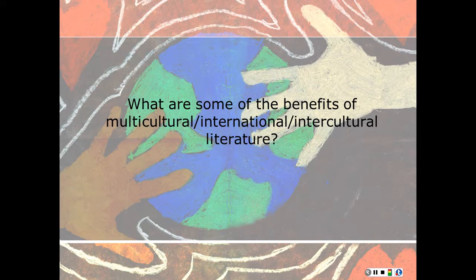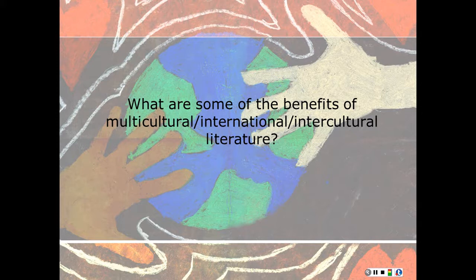One activity is to use brown and white eggs. Ask the children to tell you how they are different in color, size, and shape. Then, using clear bowls, break the eggs open and ask the children to tell you what they see. The result, despite the obvious differences, is that we are all built the same on the inside — which is what makes us human beings.